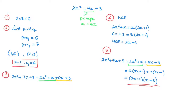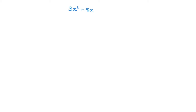Let's look at another example. As a second example, let's say we're given the quadratic 3x squared minus 8x plus 4, and we need to write this in its factored form using the method of splitting the middle term in five steps. Step 1: multiply the leading coefficient, 3, with the constant term, 4. That gives us 3 times 4, which equals 12.